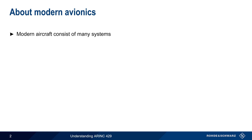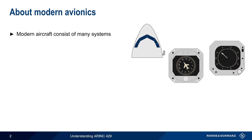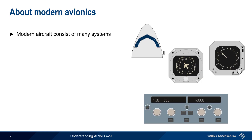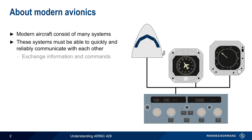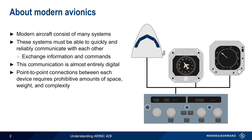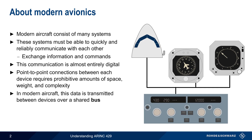Modern aircraft consists of many different systems — for example, airspeed sensors, heading indicators, vertical speed indicators, automatic pilots, etc. These systems must be able to quickly and reliably communicate with each other in order to exchange both information as well as commands. And in modern aircraft, this communication is almost entirely digital.